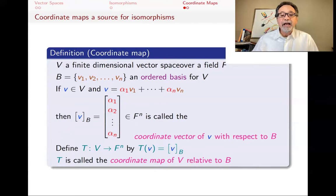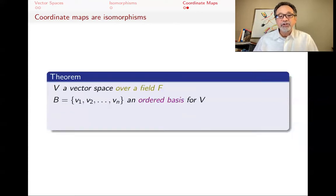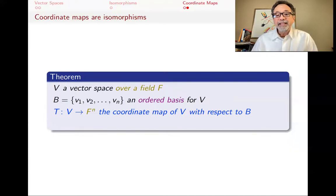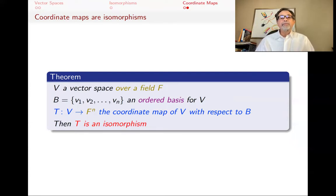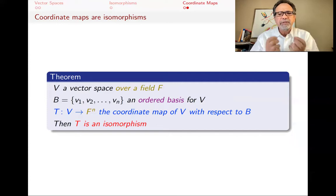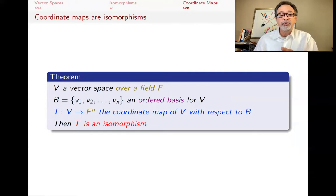The theorem we proved in the last lecture is that if you have a vector space over any field F and an ordered basis for V, then the coordinate map is an isomorphism. So we have a set of isomorphisms — namely the coordinate maps — and in the previous video we didn't fully think about what that really means. That's what we're going to do now, and the consequences are quite far-reaching.